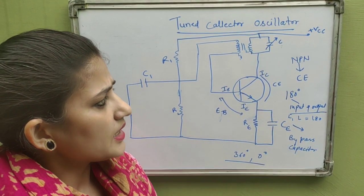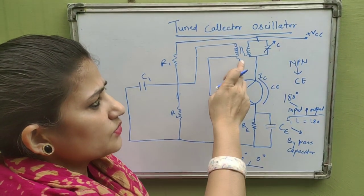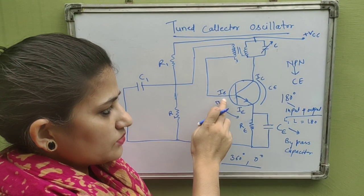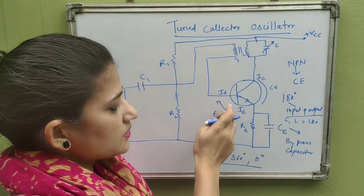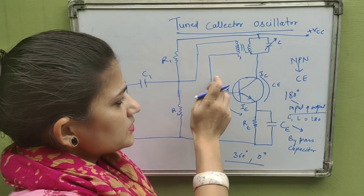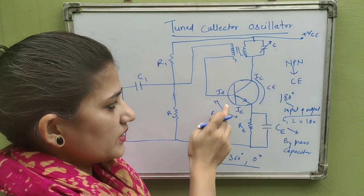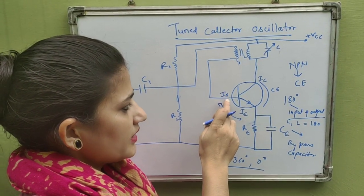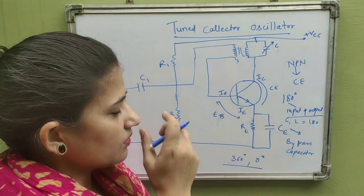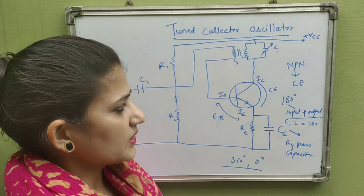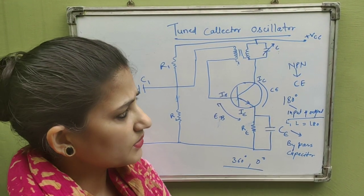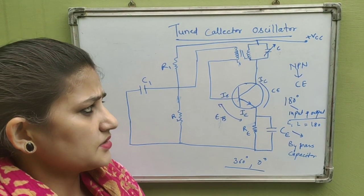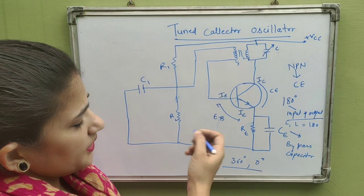Once IC reaches its maximum value, the induced EMF through L stops. With no signal fed back to the input, the forward biasing of the emitter-base junction decreases, causing IB to decrease and then IC to decrease. This cycle continues — IC rising to a maximum and falling to a minimum — as the supplied energy compensates for energy losses, sustaining oscillations.